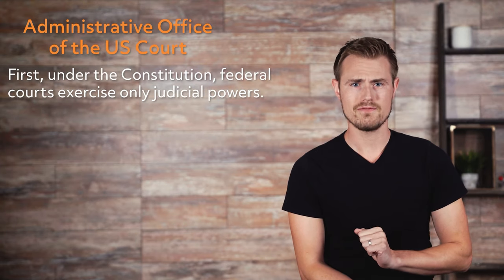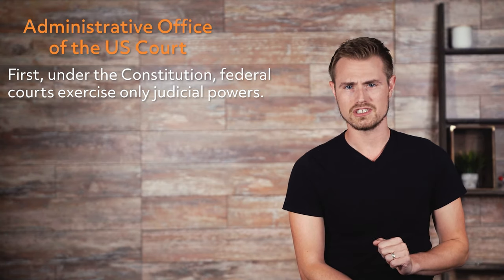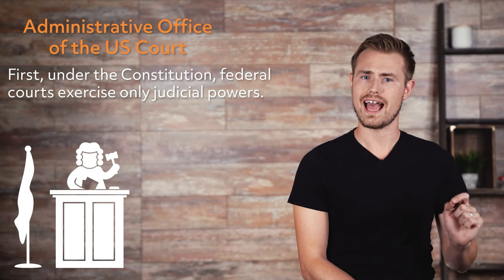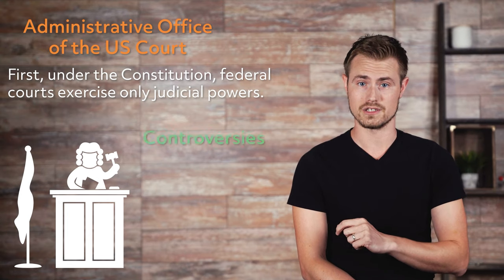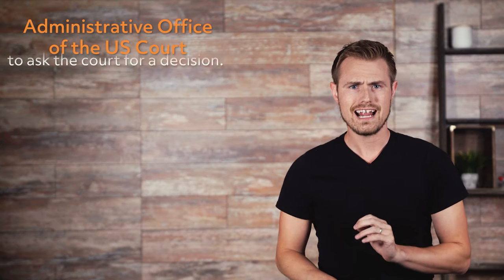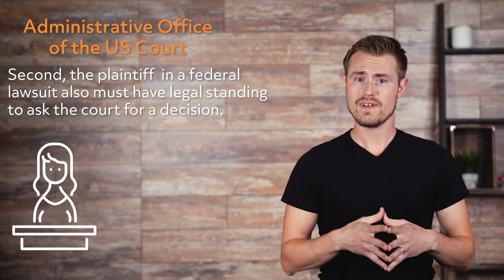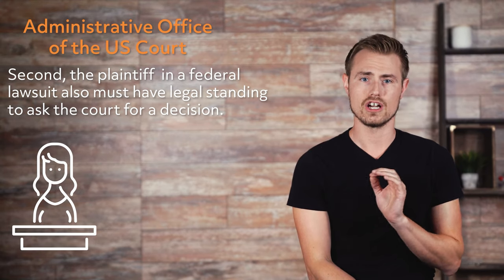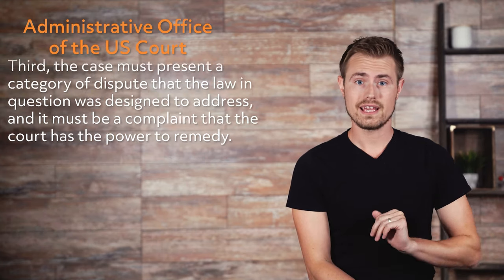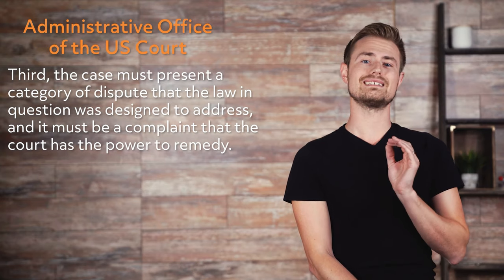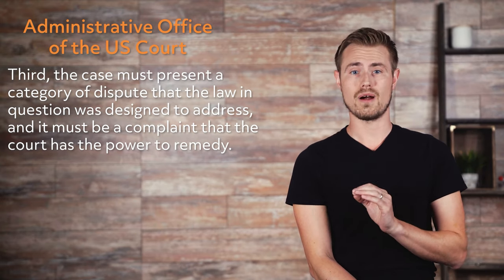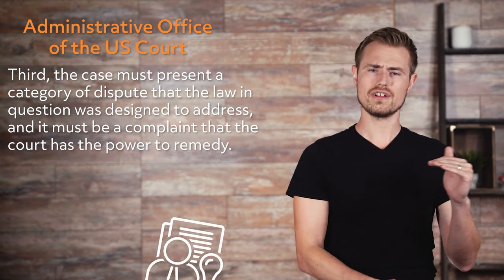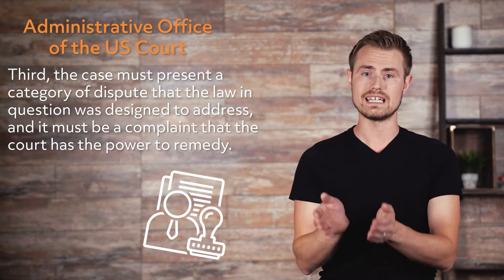Before a case can be brought to a federal court, several conditions must be met. First, federal courts exercise only judicial powers, meaning federal judges may interpret the law only through the resolution of actual legal disputes — referred to in Article III as 'cases or controversies.' Second, the plaintiff must have legal standing, meaning they must have been aggrieved or legally harmed in some way by the defendant. Third, the case must present a category of dispute that the law was designed to address, and it must be a complaint that the court has the power to remedy — the court must be authorized under the Constitution or a federal law to hear the case and grant appropriate relief to the plaintiff.